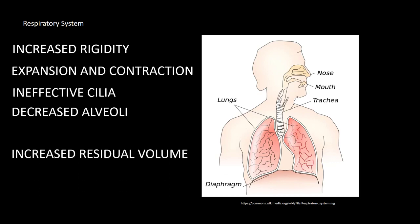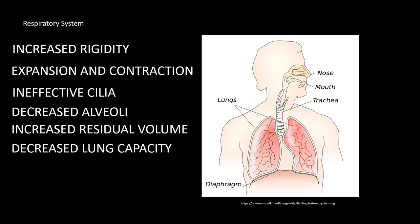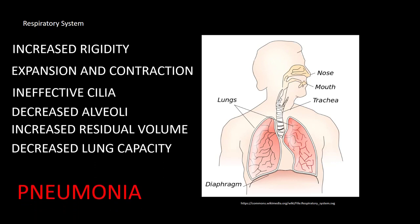Overall the lungs become smaller, less firm, lighter, and more rigid. All of these things together make it more difficult to get air in and out of the lungs, leading to increased residual volumes and decreased lung capacity. These things also place older adults at higher risk for the development of respiratory infections such as pneumonia.